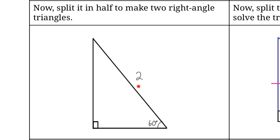We have our side length of 2 which is the hypotenuse of this right triangle, and this side on the bottom — if we split 2 in half it's just 1. We already knew that this angle on the bottom was 60 degrees, we created this 90 degree angle by splitting our triangle in half, and this angle at the top is just half of 60 degrees, which is just 30 degrees. So this is known as our 30-60-90 triangle, but we're missing one side length.